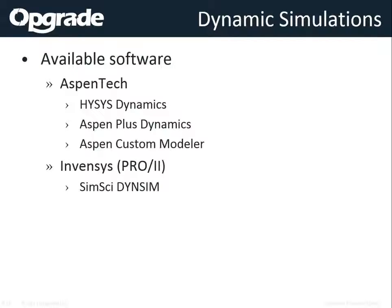Aspen Custom Modeler, though, is a nightmare of a product. Mostly if you can get by with using HySys Dynamics — which usually you can — that is the better option. Invensis also has their product, SimSci DynSim. It's also a very good product. They don't have quite the market share that HySys Dynamics does, but it's very good. If you're starting with a Pro 2 simulation anyway, you might as well look at DynSim if you need to do a dynamic simulation.